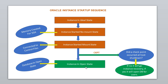The next state is the instance in an open state. Before coming to the open state, it does a couple of checks. It will check whether a checkpoint occurred or not during the previous instance shutdown — for example, if the Oracle instance crashed or went down for some reason.